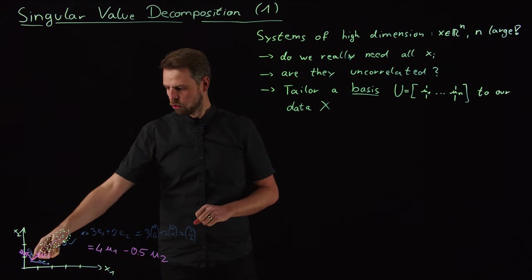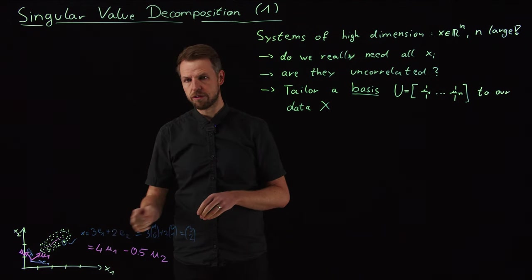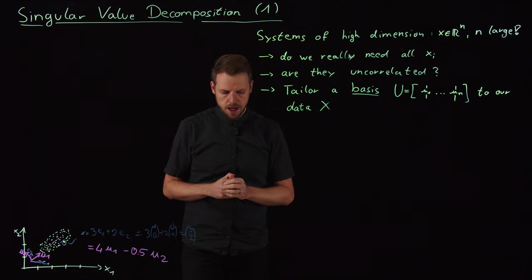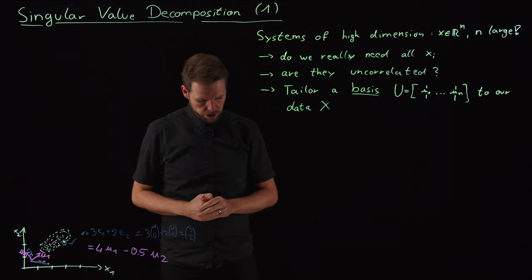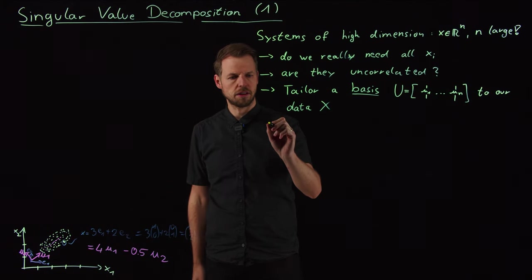And so what you can do now, if you do this, you can say, okay, the u2 direction is apparently not all that important if I want to get just a rough estimate. And so this is what the singular value decomposition is all about.